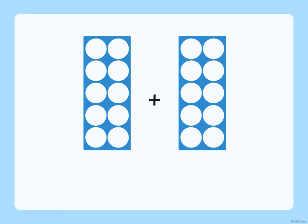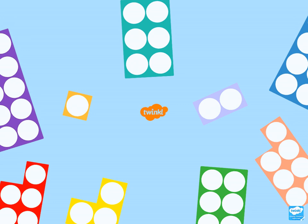Last one. We're doubling ten. What's double ten? Double ten is twenty. Well done.